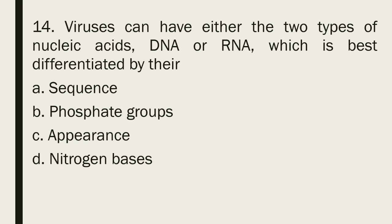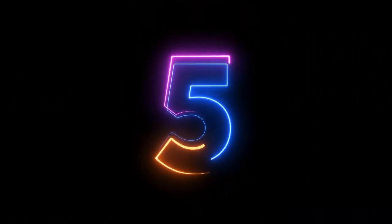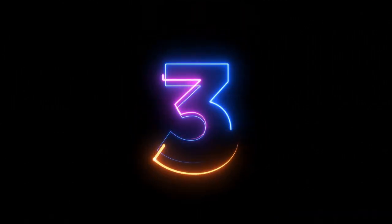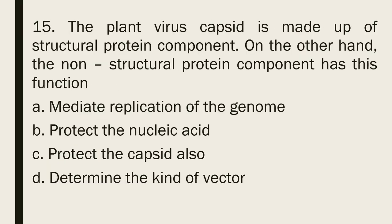Question 14: Viruses can have either of two types of nucleic acids, DNA or RNA, which is best differentiated by their: a. Sequence b. Phosphate groups c. Appearance d. Nitrogen bases. The correct answer is letter d, nitrogen bases.